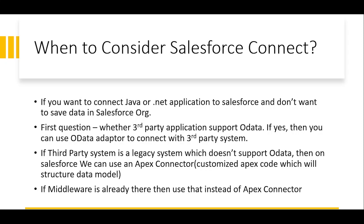If the third-party system supports OData, it saves a lot of time and is the best choice. But if it does not support OData — for example, if it is a legacy system — we can still use Salesforce Connect, but in that case we have to use the Apex connector rather than the OData adapter, code it there, and then utilize the third-party application data and show it on Salesforce. If middleware is already there, you don't need to write an Apex connector; it can do the job for you and all you need to do is configure Salesforce Connect.